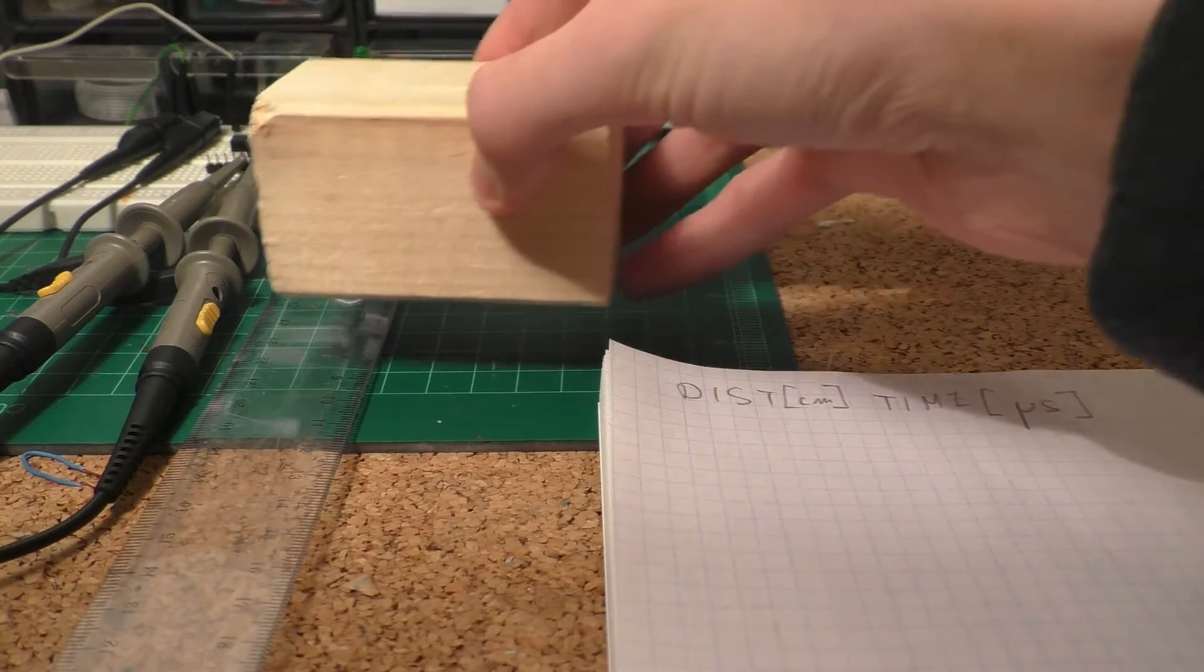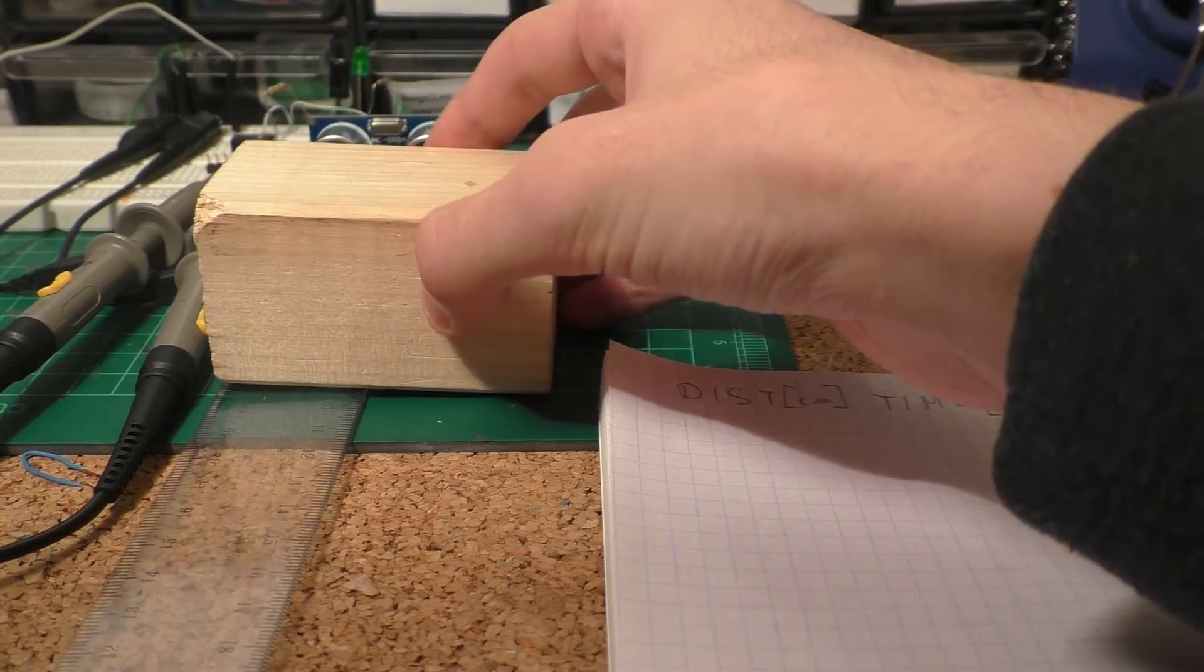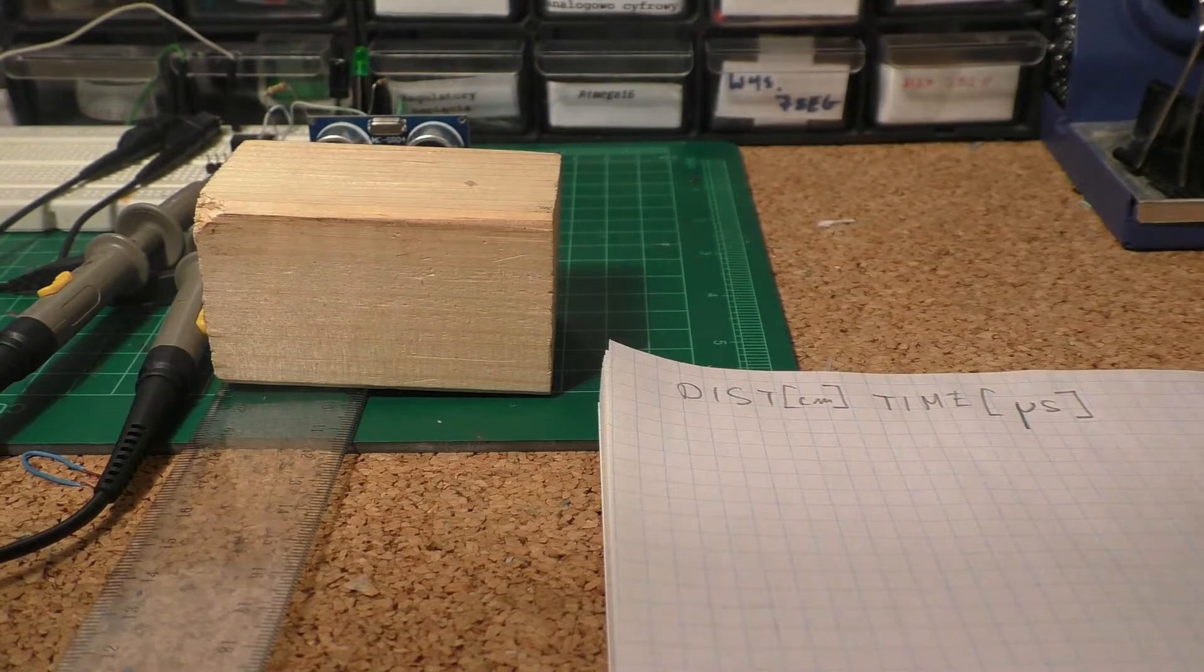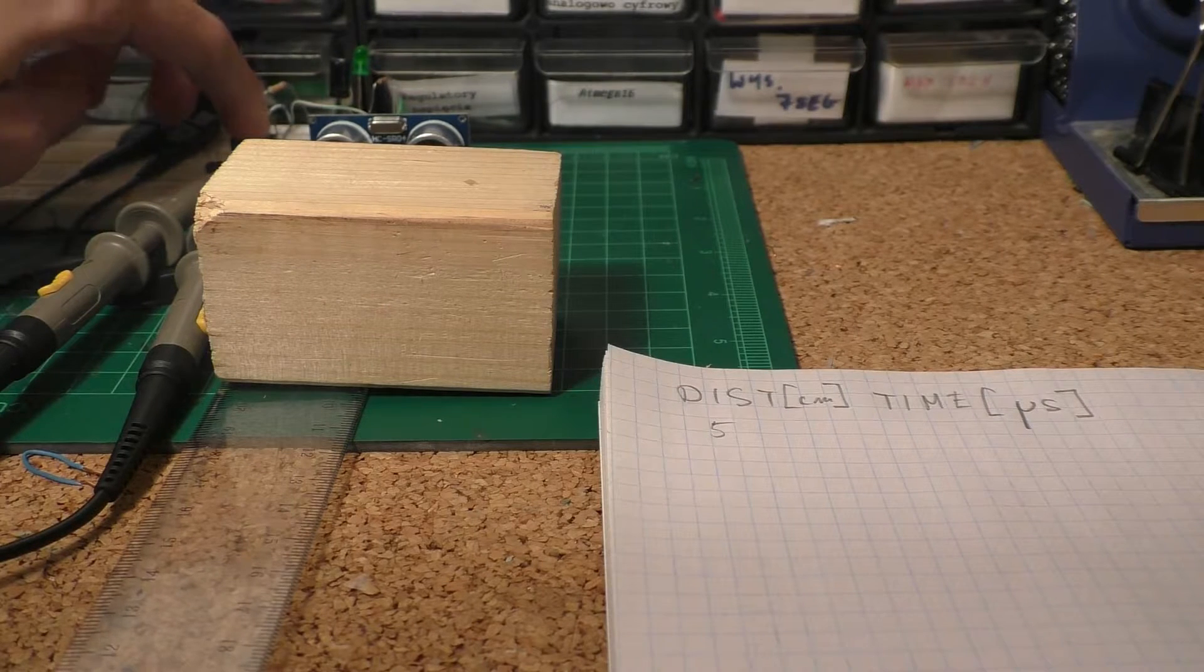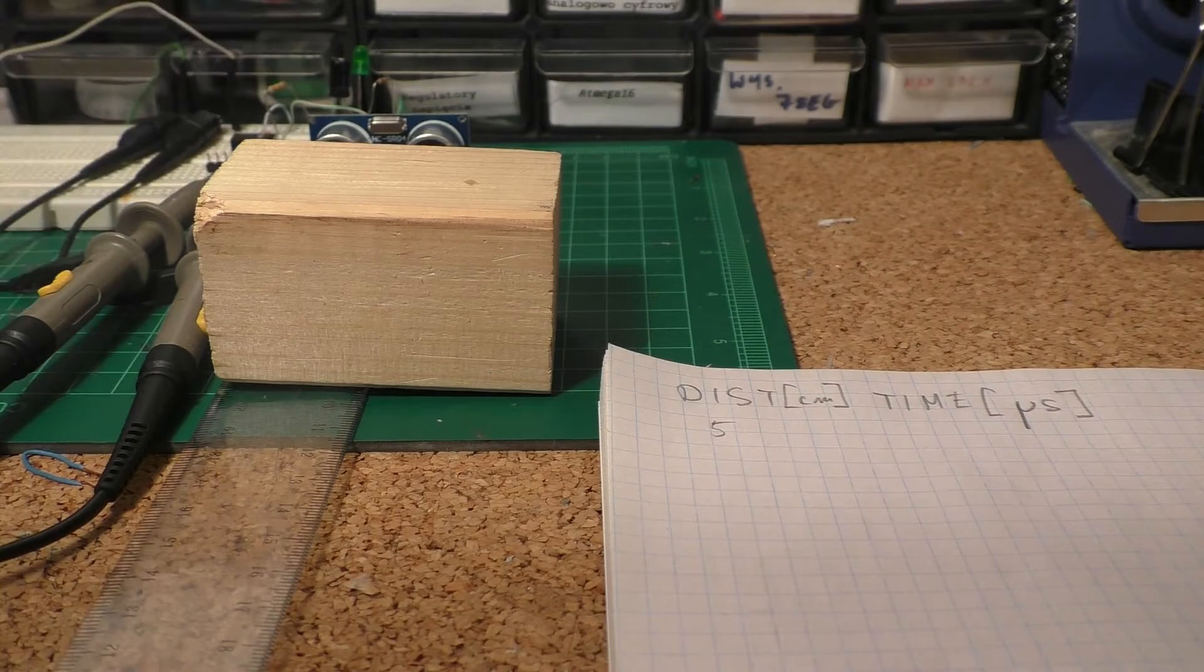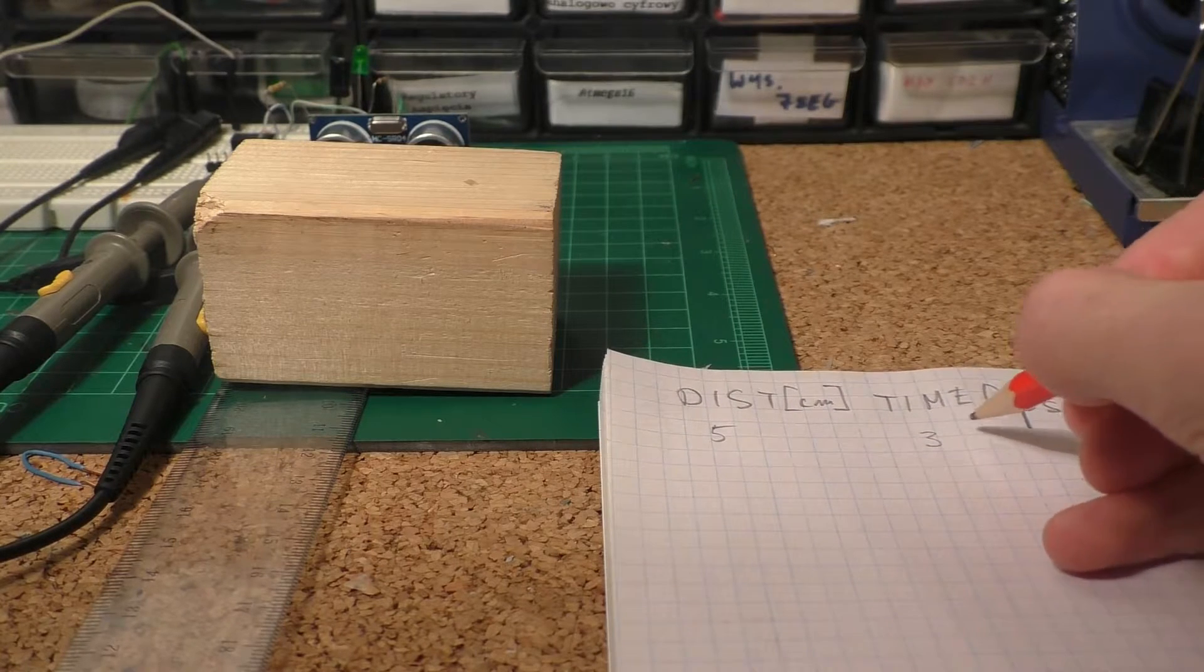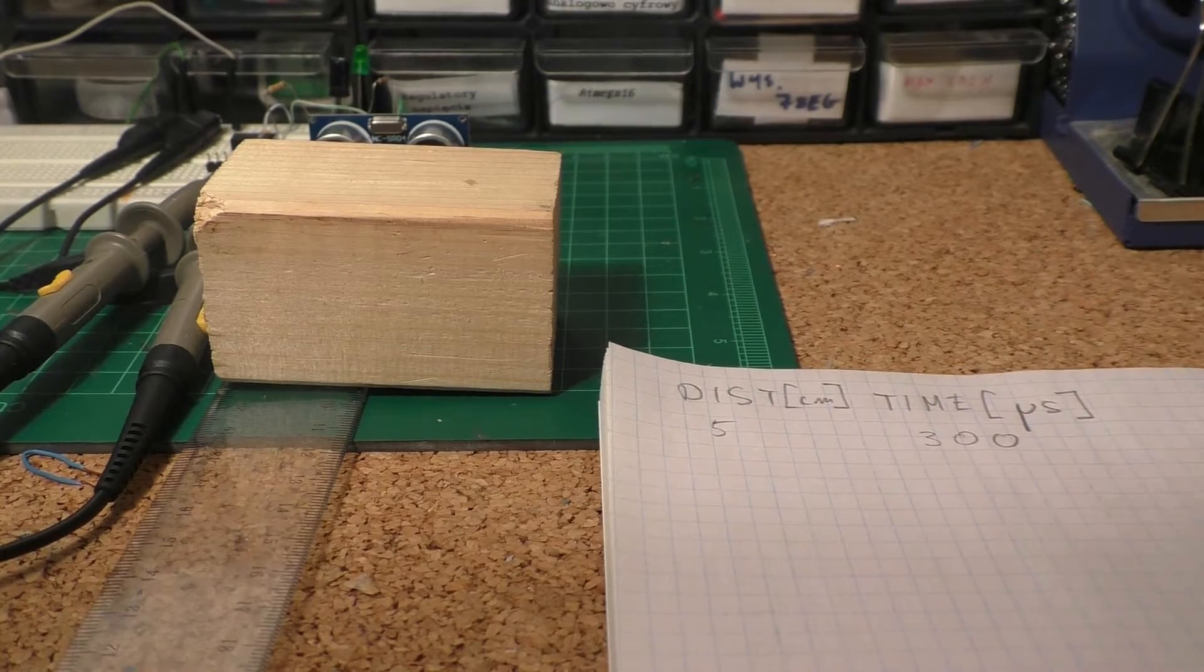First I'm going to place the block at 5 cm from the sensor. So the distance is 5 cm. Let's measure the positive pulse time. And the time is around 300 microseconds.